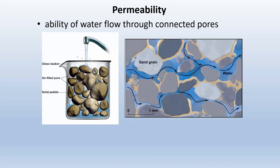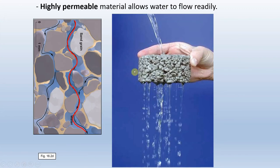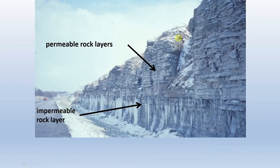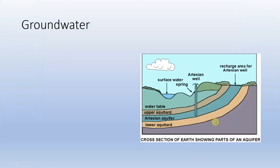Porosity alone isn't enough — those pore spaces must be connected. Permeability is the ability of water, oil, or gas to flow through connected pores. Shale and clay have high porosity but isolated pore spaces, making permeability very low. Permeable concrete — essentially rocks glued together — shows how easily water flows through highly porous and permeable material. We can see examples of permeable rock layers where water soaks in, versus impermeable layers where water stays on the surface and forms icicles. Next we'll start talking about aquifers.